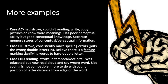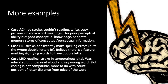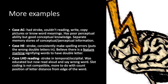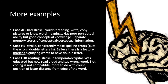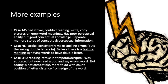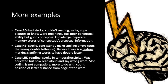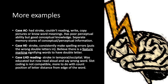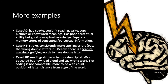Case HE had a stroke and consistently made spelling errors, placing the wrong double letters in words. This led to the belief that there is a feature marking system in the brain to signify whether words contain double letters or not, though this may be specific to the English language, which is notorious for having rules and many exceptions. Case LHD had a stroke in the temporal occipital area and, despite being educated, read aloud and said words incorrectly. Previous theories of slot coding were not compatible, and it was found that LHD's ability to count the position of a letter by its distance from the edge of a word was impaired.